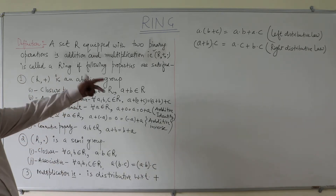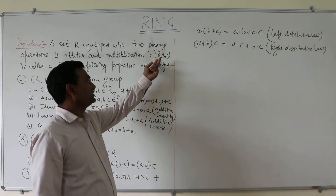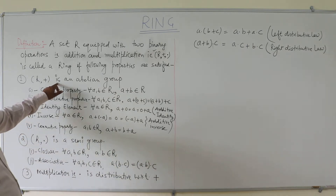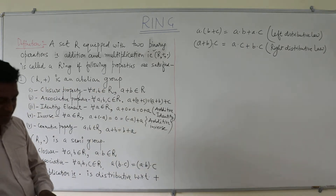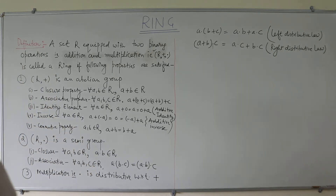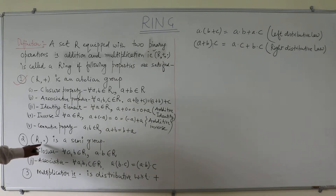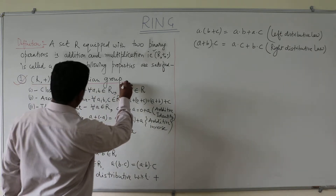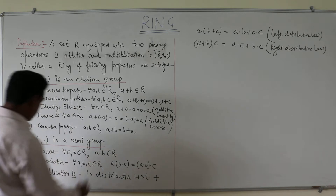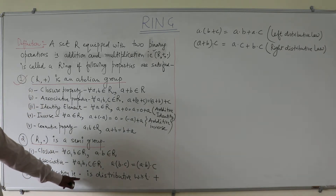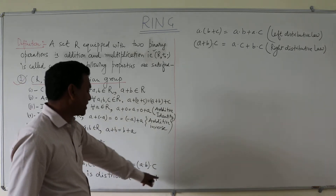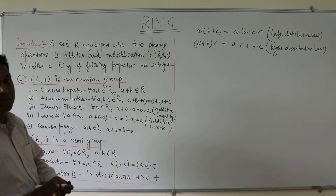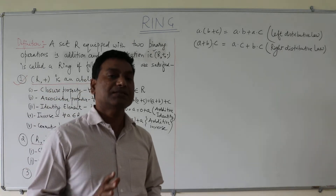So this algebraic structure will be a ring if it has these three properties. First property is (R, +) is an Abelian group. Second property is (R, ·) is a semigroup. Third property is multiplication (·) is distributive with respect to addition. If any set holds these three properties, then it is known as a ring.